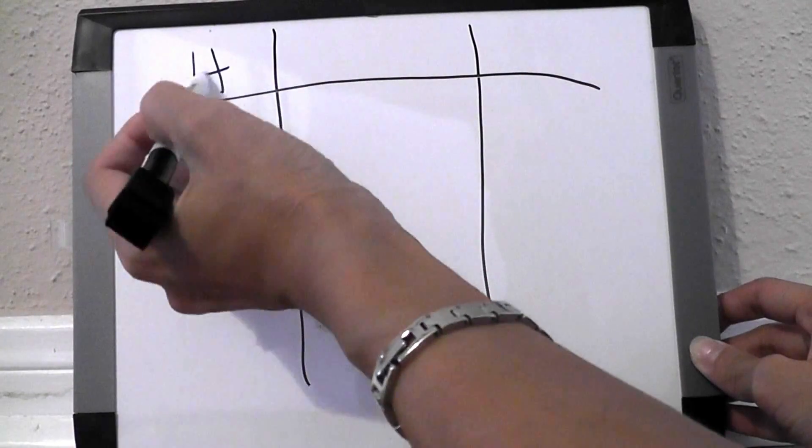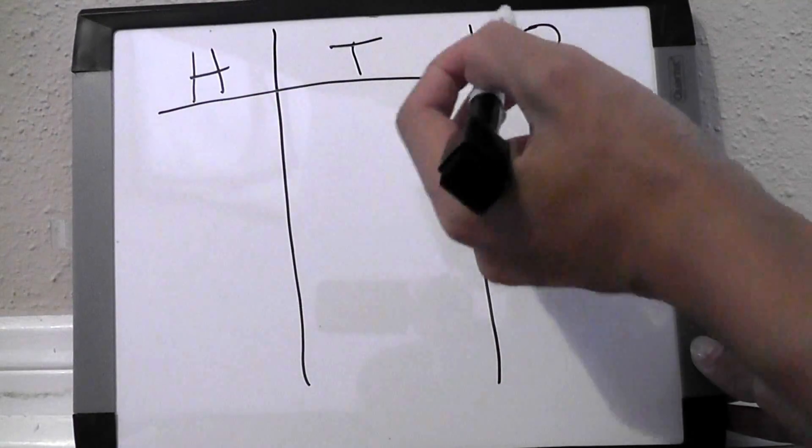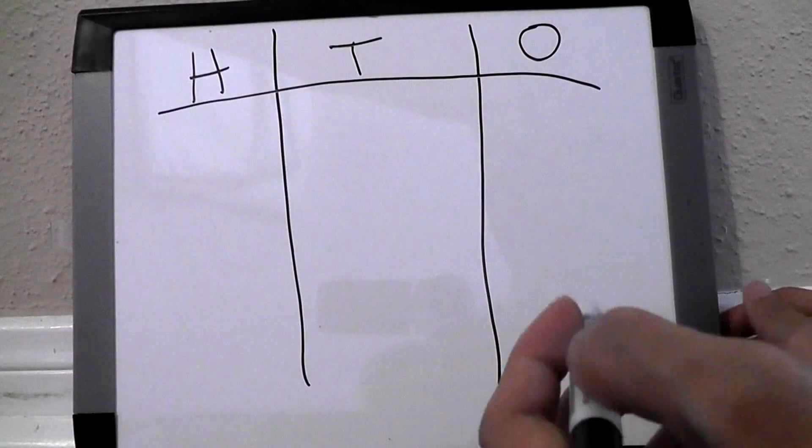H stands for hundreds, T will be for the tens, and O is for the ones.